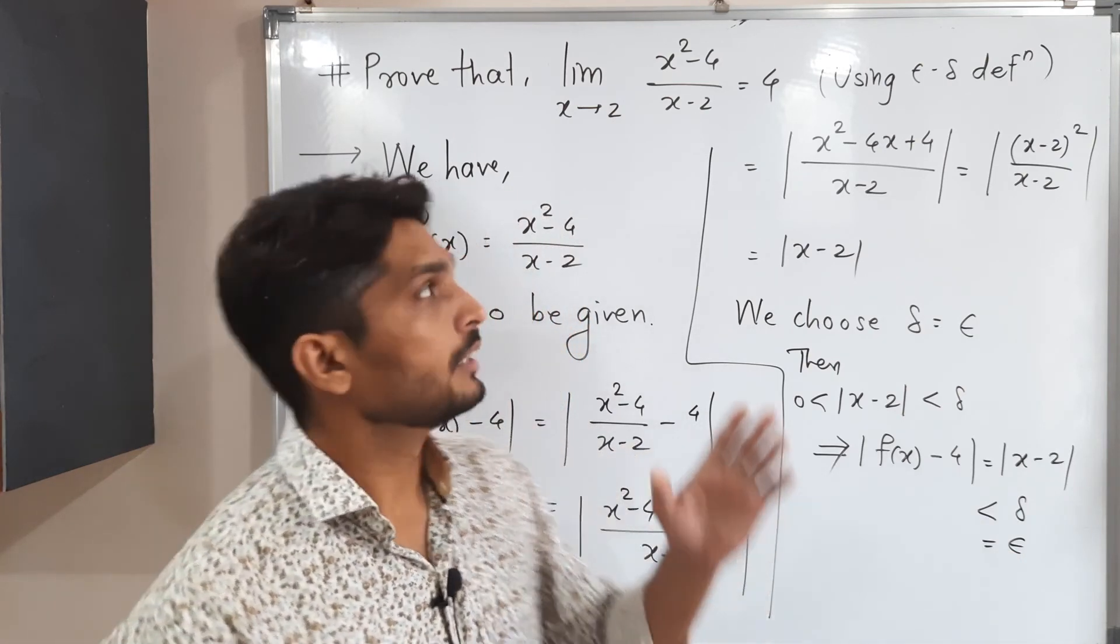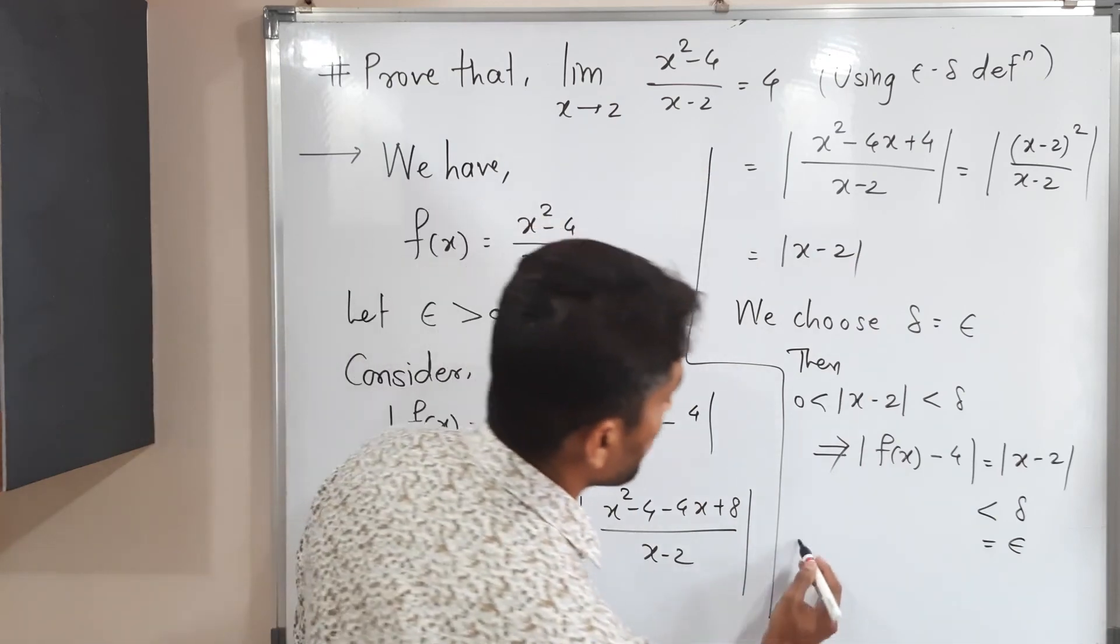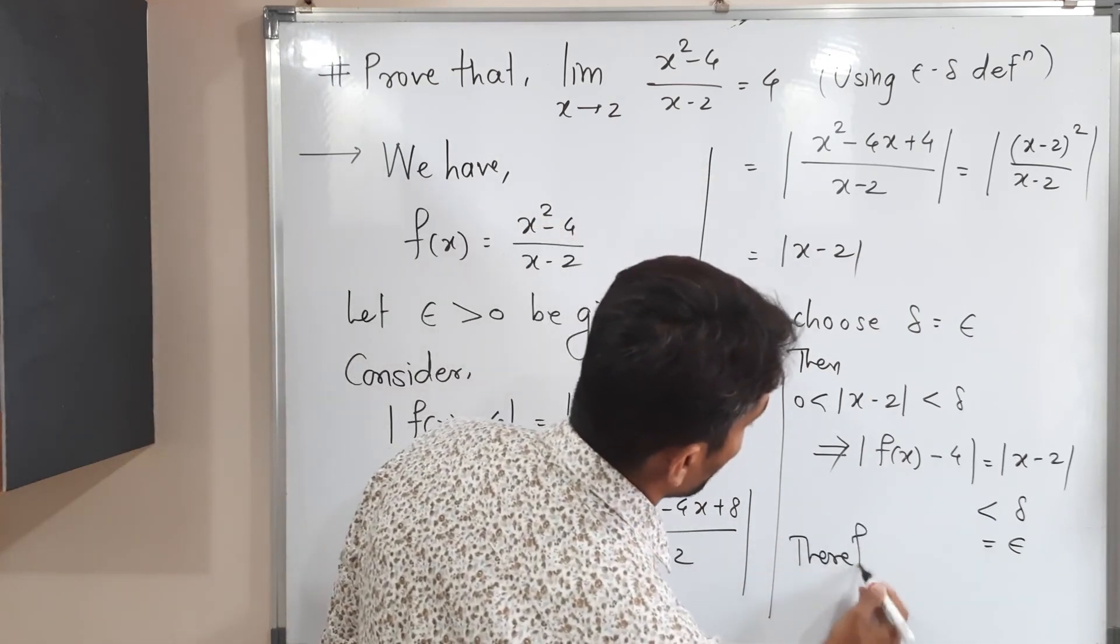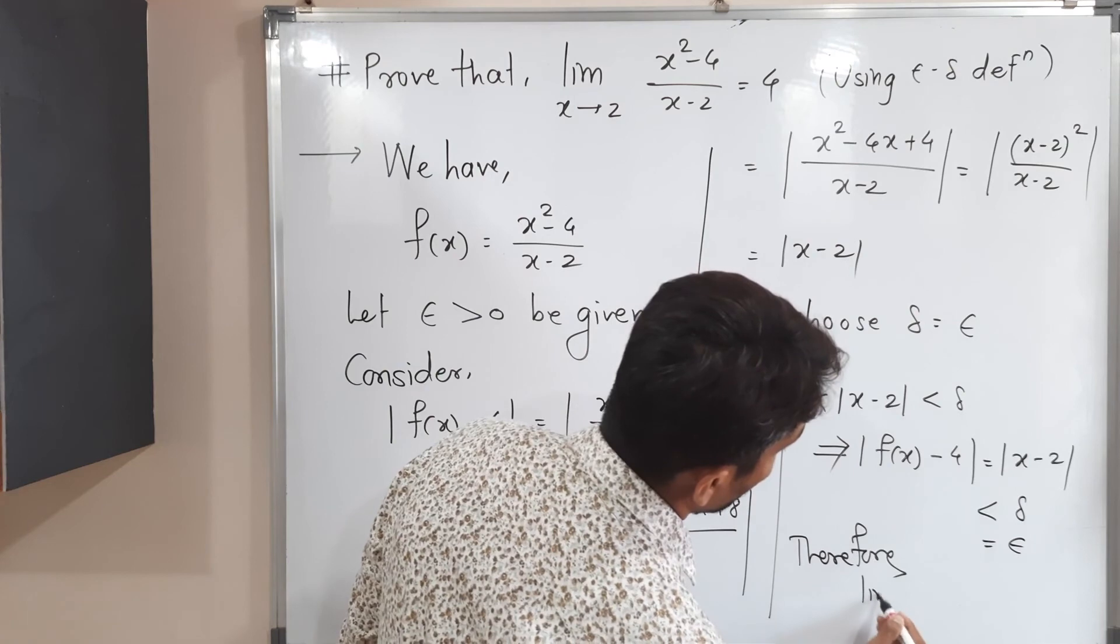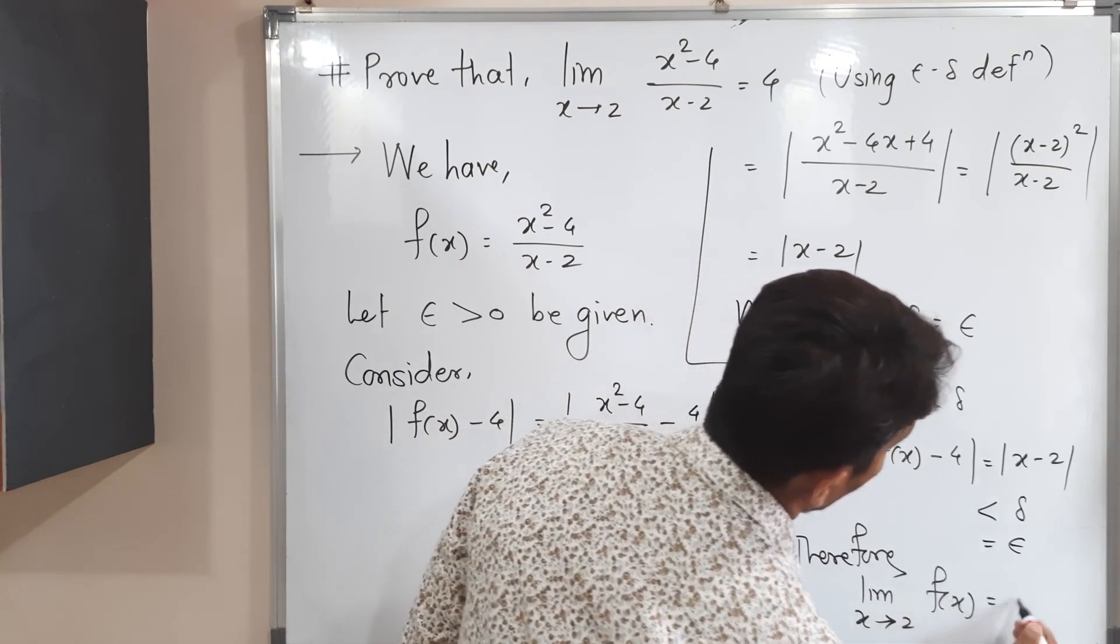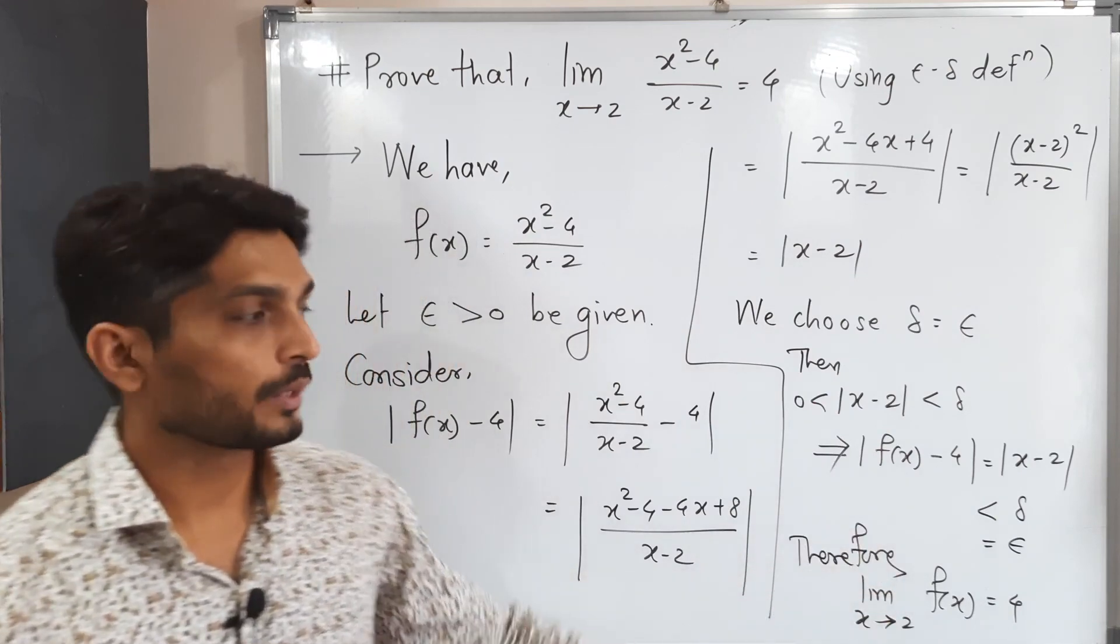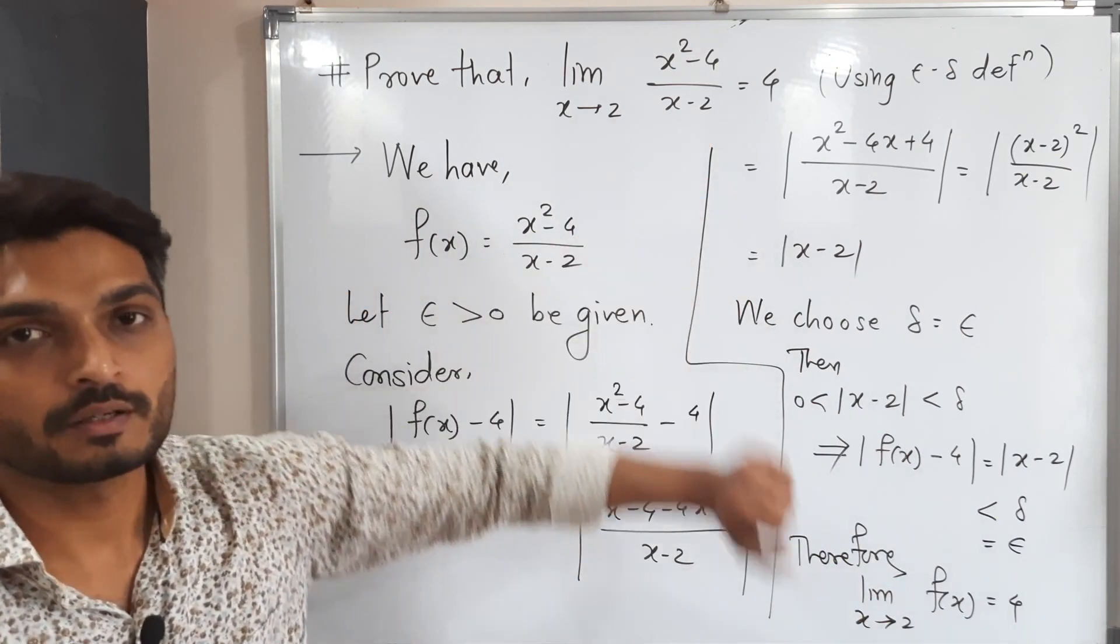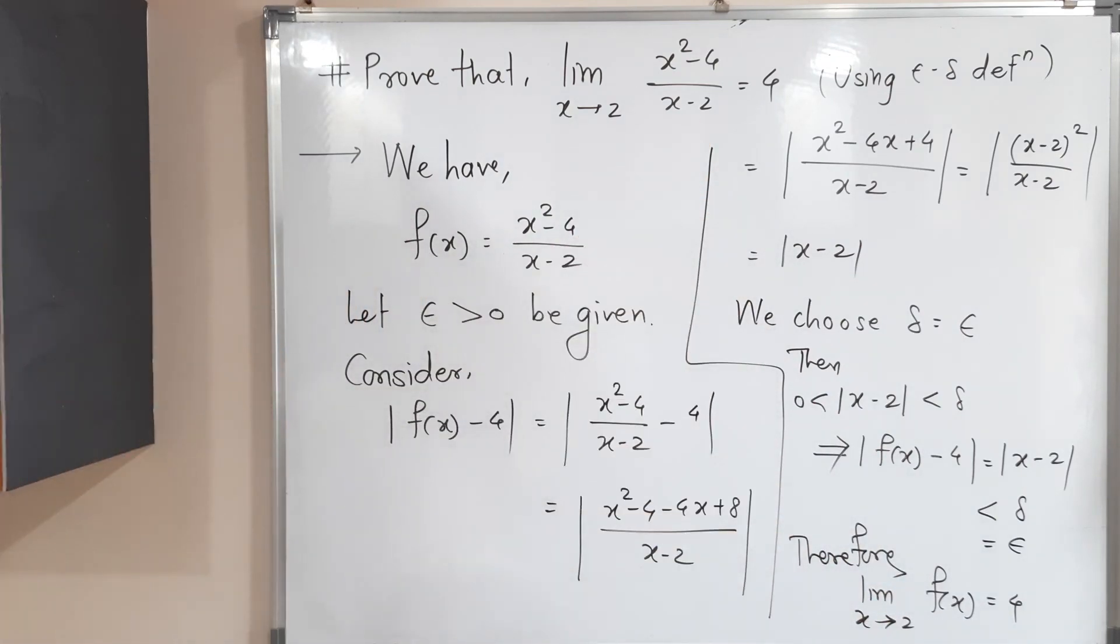So what we get finally mod f of x minus 4 is less than epsilon. Yes definition is satisfied and we can say yes this is a required limit. So therefore, limit x tends to 2 f of x is equal to 4. In this way we proved it. Now what is our f of x? This is our f of x. So you can make a screenshot of it. Then we will stop. Thank you. Bye bye.